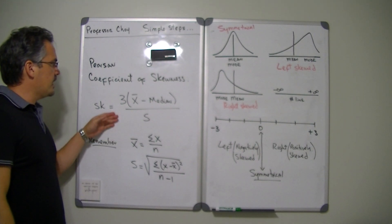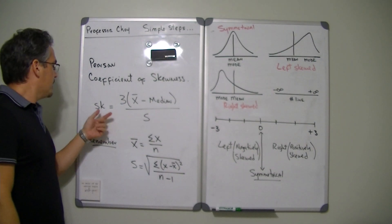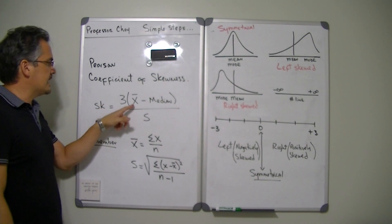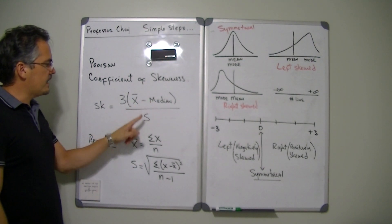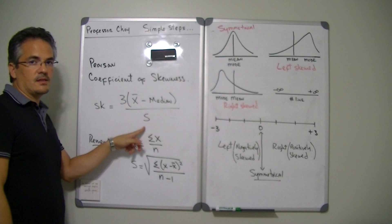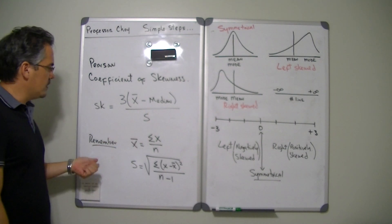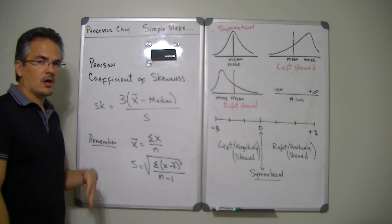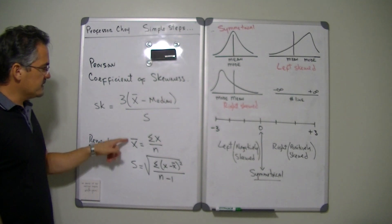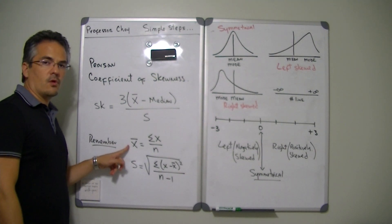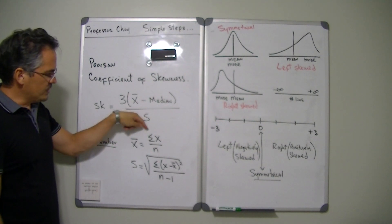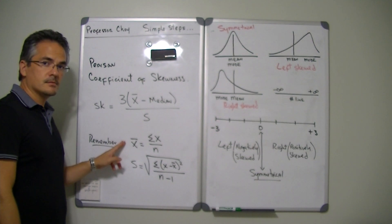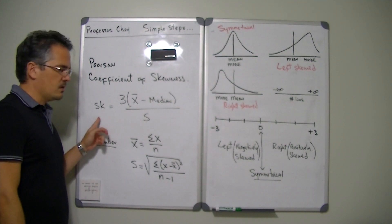This is the basic formula for the Pearson coefficient of skewness. Skewness equals 3 times x-bar — the sample mean — minus the median, divided by s, the standard deviation for a sample. In order to understand this formula, you need to remember that some of these letters are formulas themselves. The x-bar here is the average or arithmetic mean, which is the summation of x over n, and you need to calculate that first.